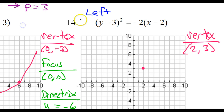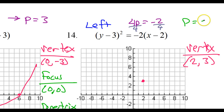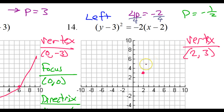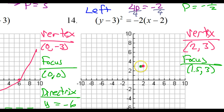For the focus, I need to know the p value. 4p is equal to negative 2. Dividing both sides by 4, p is equal to negative one half. That means as I go to the left, I'm going to go one half of a square — so the focus is going to be really close. My focus is 1.5 comma 3. Ignoring the negative sign, my focal width is 2, that means 1 up and 1 down — so this is a tiny little parabola.